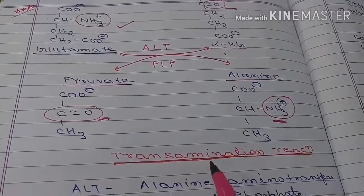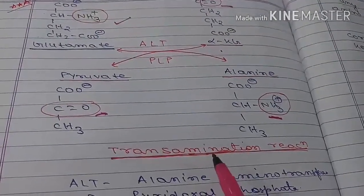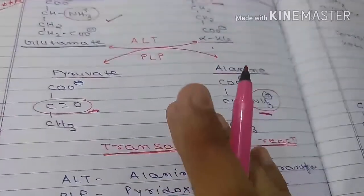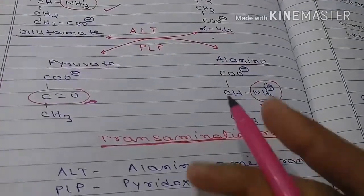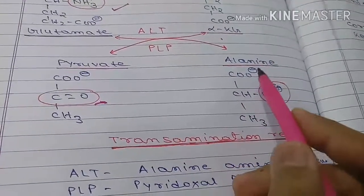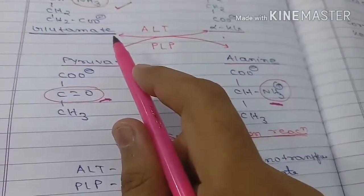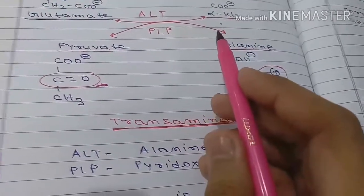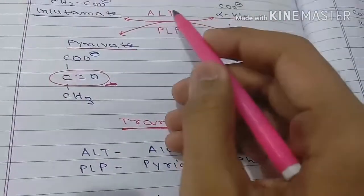Today we are going to discuss the transamination reaction. Transamination is the exchange of an alpha amino group between one alpha amino acid and another alpha keto acid. Here you can see that from alanine, the amino group is transferred to alpha-ketoglutarate to form glutamate. In almost all cases, the amino group is accepted very readily by alpha-ketoglutarate so that glutamic acid is formed.